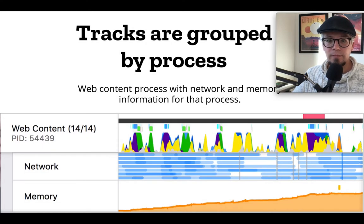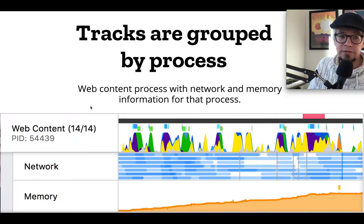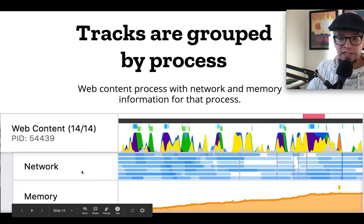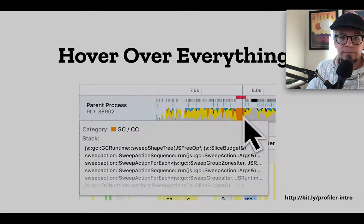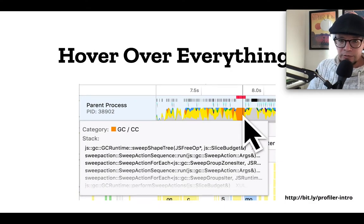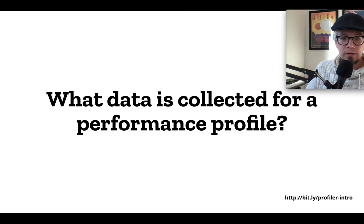Tracks are grouped by process, so when there's a single process there are lots of threads of execution in it and they're grouped hierarchically. You can see there's web content as the main thread of the parent process and then whatever other tracks are for that specific process, so you can analyze it from there. Each process almost acts like a separate program executing at the same time. A big tip when interacting with the profiler: hover over everything. If you see a curious bit of orange color with a little red dot over it, hovering will show you the stack of what's happening and a category — for example, GC and CC, which means garbage collection is happening at that moment.